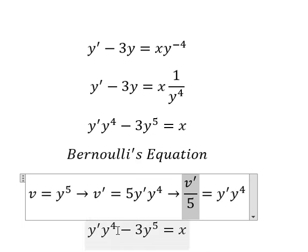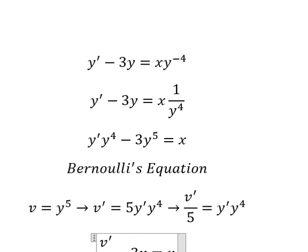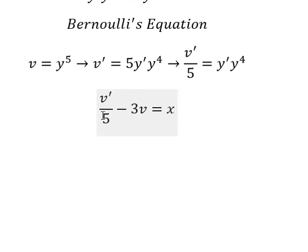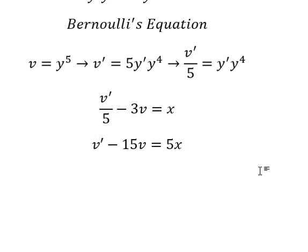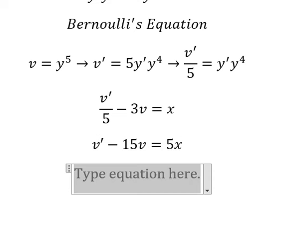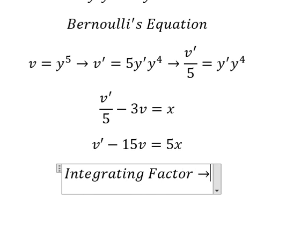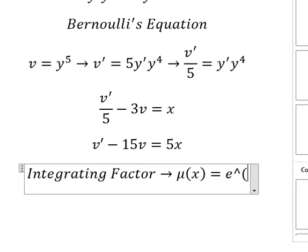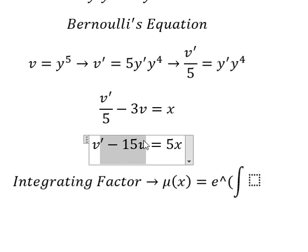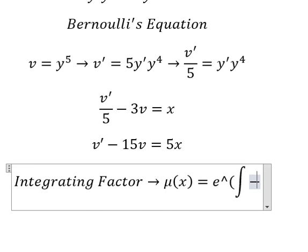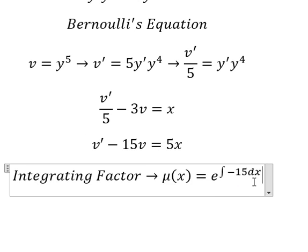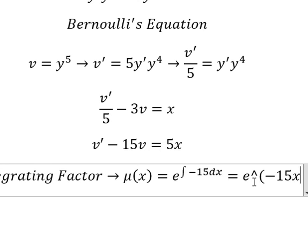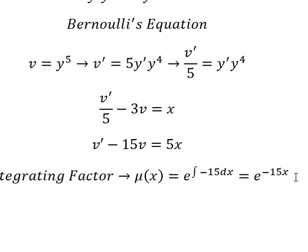So I will mark this one here. This one we change by v. Next, we multiply both sides by number 5. Next, we have v and the first derivative of v. We can use the integrating factor. So we need to find mu of x equals to e to the power of the integral. We see that negative 15 is next to v. This is about the integrating factor, and we have e to the power of negative 15x. That means we multiply both sides by this one.